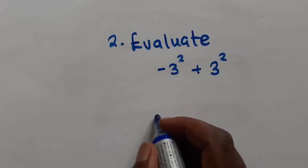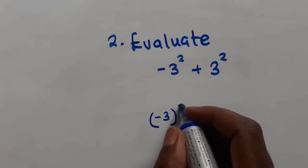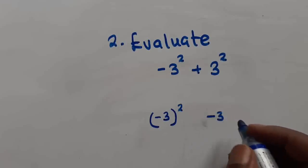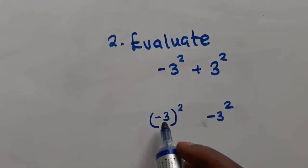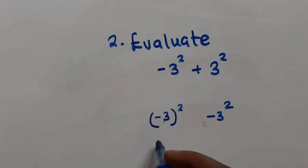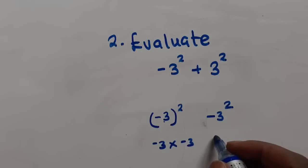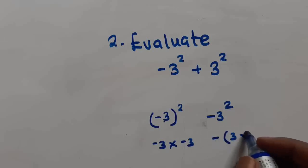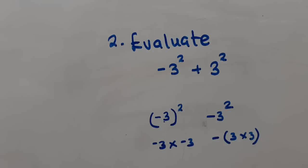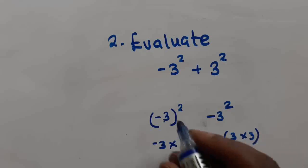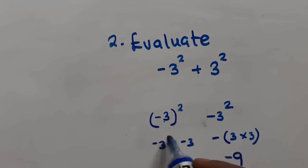I want you to see the difference between this question as well as... So what do you see here? So negative is part of this 3. So as we multiply, when we are expanding this one here, it's going to be negative 3 multiplied by negative 3. As opposed to this one, we're going to have minus 3 multiplied by 3. So what we have in this case is this one here, which is going to give us a minus 9 because I wanted you to see the difference here.